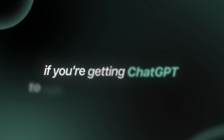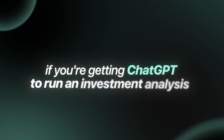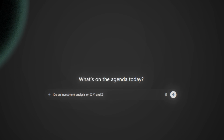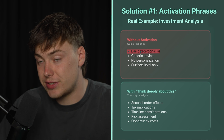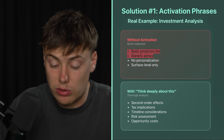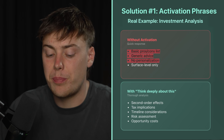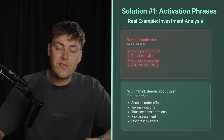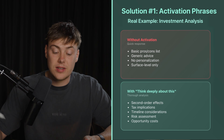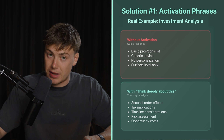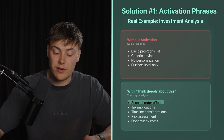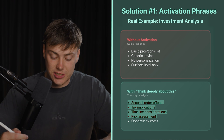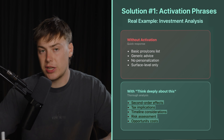For example, if you're getting GPT to run an investment analysis and you just put in "do an investment analysis on X, Y, and Z," it might give you a basic pros and cons list — general advice that won't be personalized and will probably be surface level only. If you add even just the four words "think deeply about this," you'll elicit things like second order effects, tax implications, timeline considerations, risk assessment, and opportunity costs.